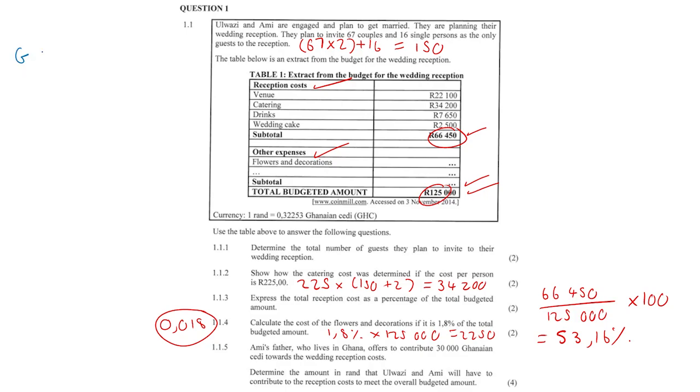This Ghanaian Cedi, GHC 30,000, we are going to divide it by 0.32253, because 1 rand is equal to 0.3253. So we divide. It is less than, in other words the rand is stronger. Sorry, that is my mistake. The rand is weaker, sorry.